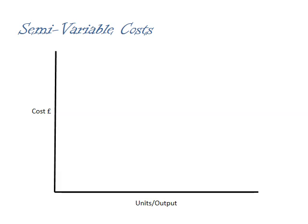Often with costs, whether they're semi-variable or variable, the link between output and cost is not perfect — it's not a perfectly straight line. On the graph, we can see that we've got something of a wavy line from our data points, but there is a definite relationship: as output increases, costs tend to increase. But we don't know exactly what the relationship between output and costs is. It might be described by the green line, or it might be described by the red line. We need some method to actually establish this particular relationship.